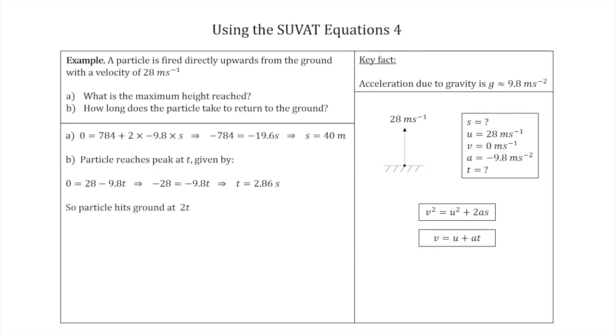Great, so now all we have to do is say that the time the particle takes to hit the ground is 2t, because this is the time it takes to go from the ground up to 40 meters. It then takes this amount of time again to get back down to the ground. So 2 times 2.86 is 5.72 seconds. So that is the answer to part B.